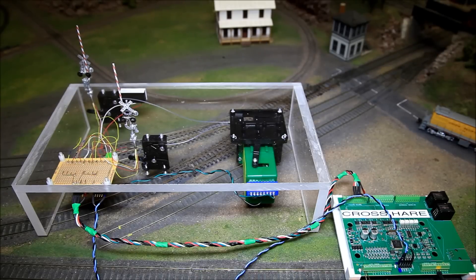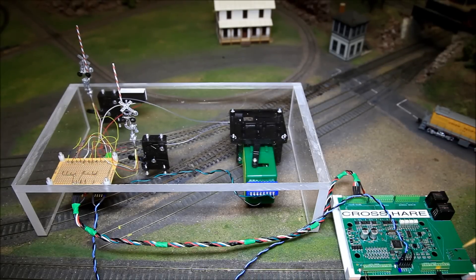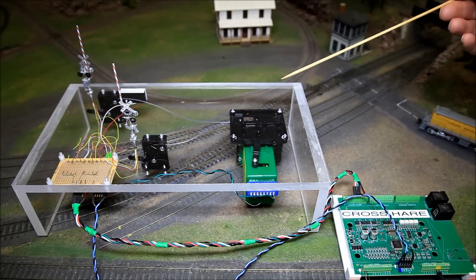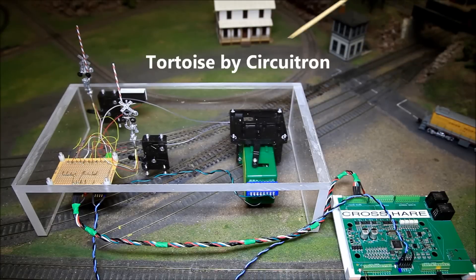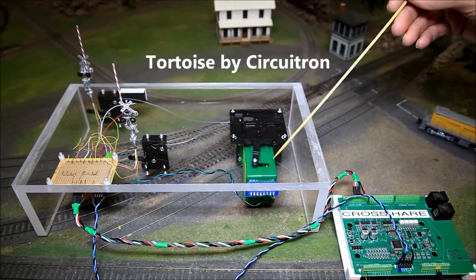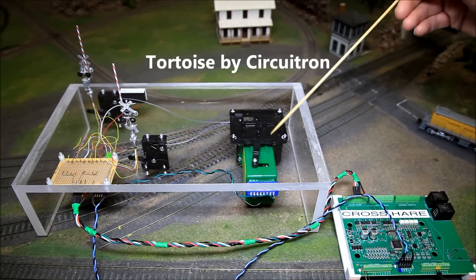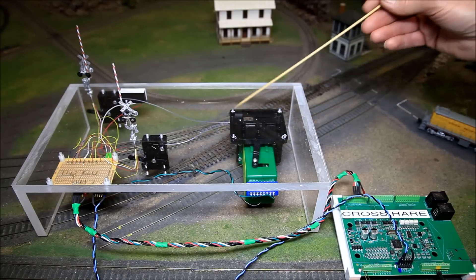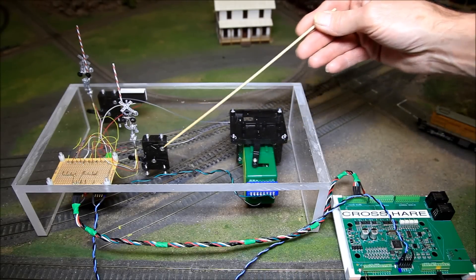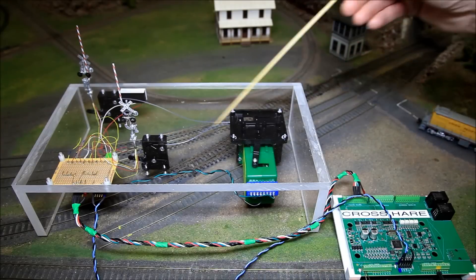The mechanism that actually operates the crossing is a tortoise, and Circuitron also makes a signal activator, which is this piece right here, which transfers the motion of the tortoise arm into an up-and-down motion.